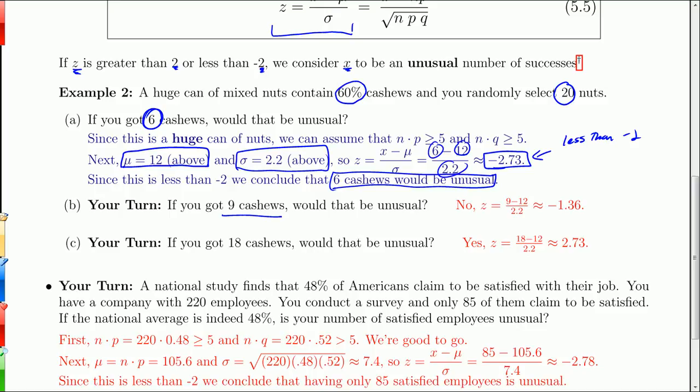What about 9? Well, we plug 9 into the same formula. 9 minus 12 over sigma 2.2. We get negative 1.36. That's actually between negative 2 and 2. So there's nothing unusual about that.